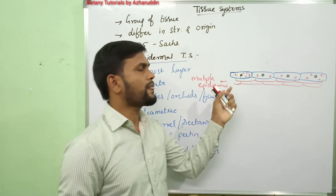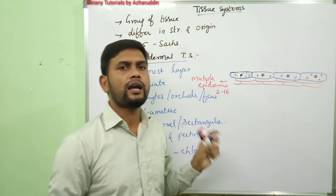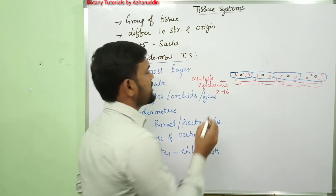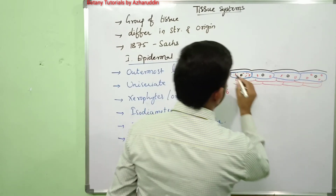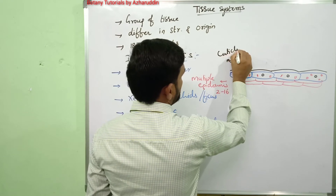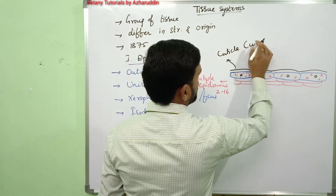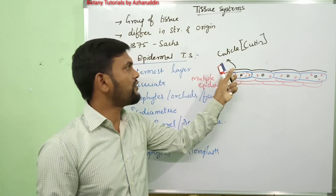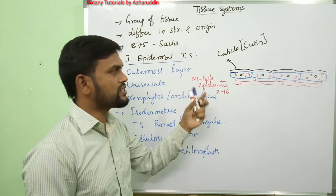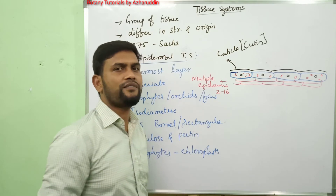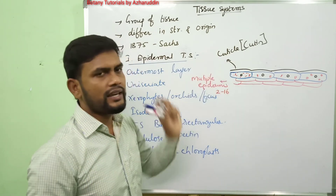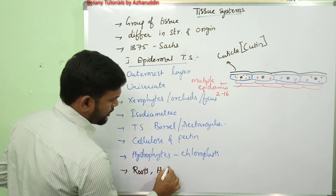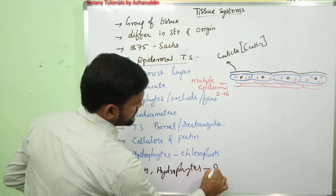Generally, epidermal cells contain leukoplasts, making them colorless. Outer to the epidermis there is a cuticle, which is made up of cutin. This cuticle is protective in nature and helps in reducing transpiration. The cuticle is absent in roots and also in hydrophytes.